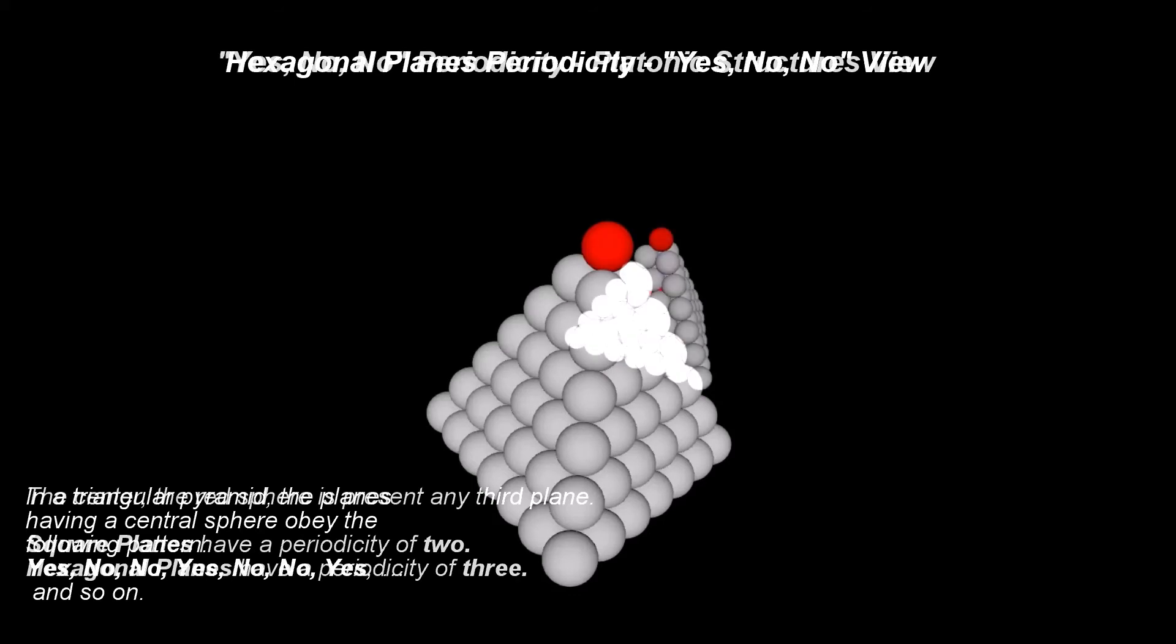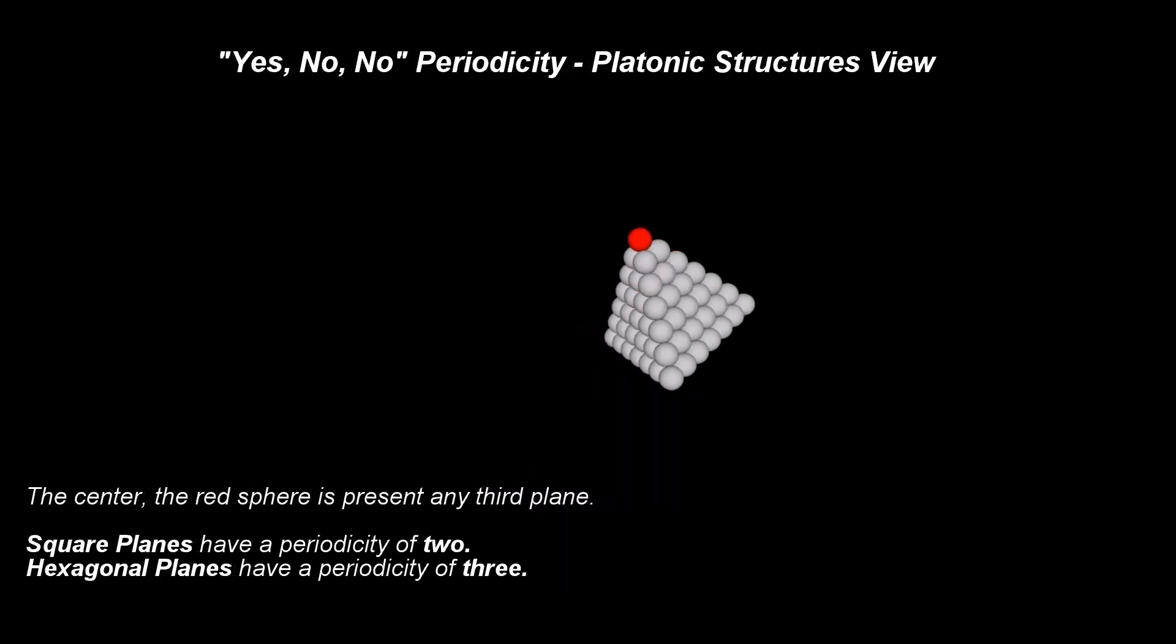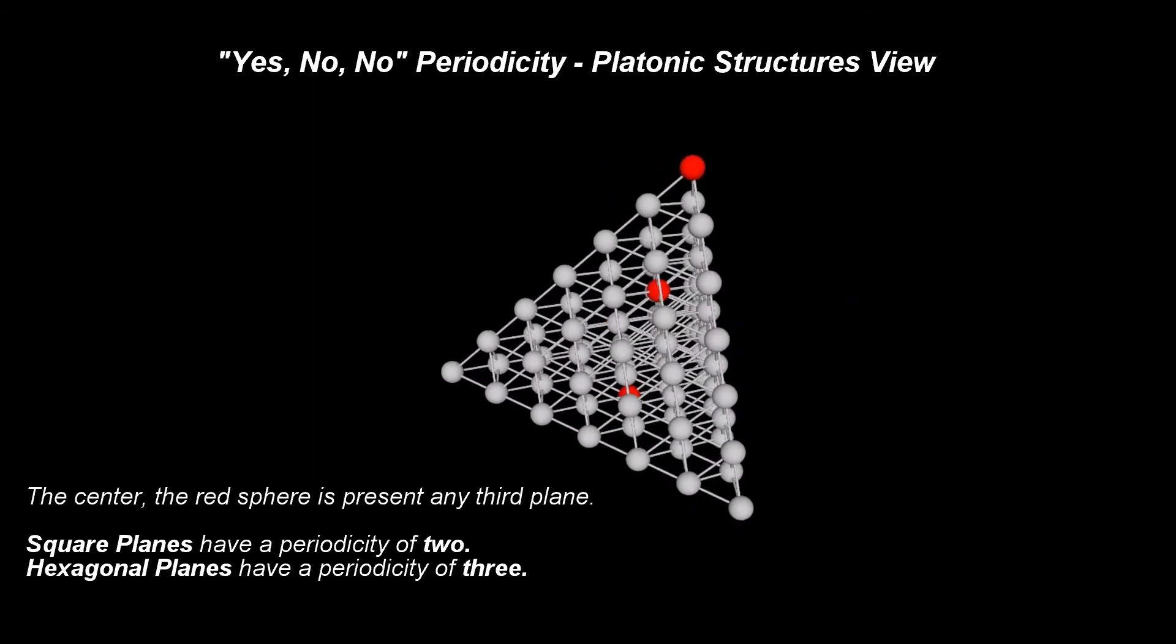To see what's going on inside, we will use the tetrahedron represented as a platonic structure. This is obtained by expanding the spheres.